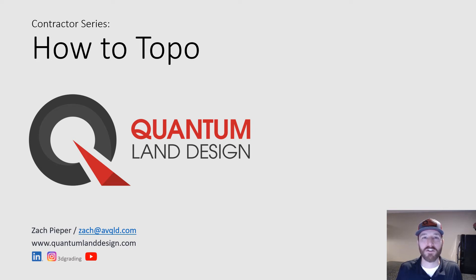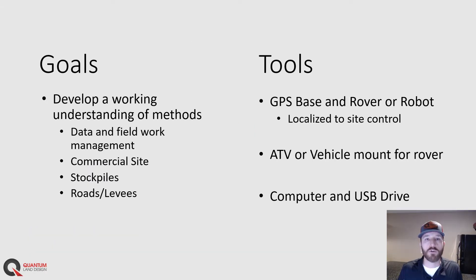Zach with Quantum Land Design here today. We're going to walk through how to topographically survey two different kinds of job sites: a commercial job site and roads and levees, and we'll also take a look at how to capture accurate data on stockpiles. We really only have one goal here today and that's to help you understand topographic surveying methods and how you can apply them on your job sites or roads. We'll take a look at data and field work management, how to topo a commercial site, stockpiles, and road and levee projects.